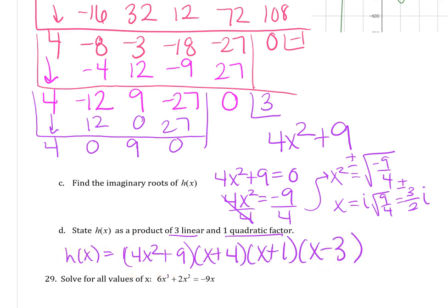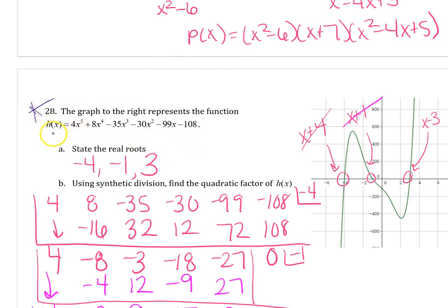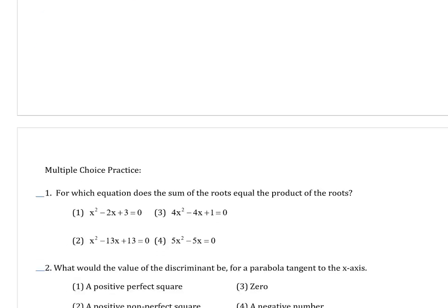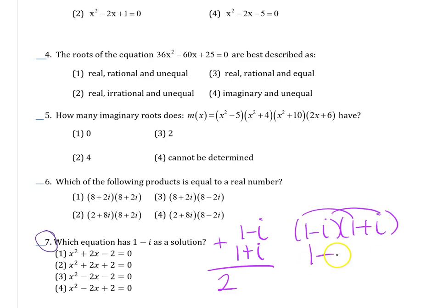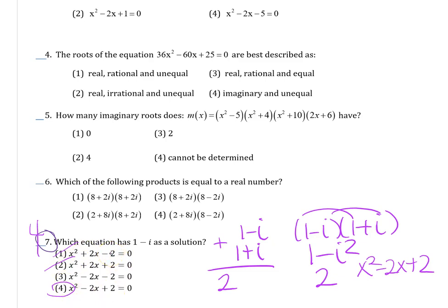For the multiple choice question — which equation has 1 minus i as a solution — rather than solving all of them, remember imaginary roots come in pairs. So if 1 minus i is a root, then 1 plus i is also a root. The sum of those is 2, and the product is 1 minus i squared, which is also 2. So you're looking for x squared minus 2x plus 2, which is choice 4. Solving all the equations would be a waste of time — this is the short way to do it. Happy studying. Good luck.